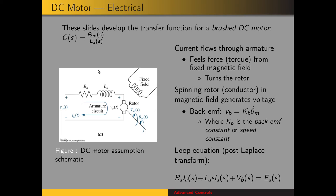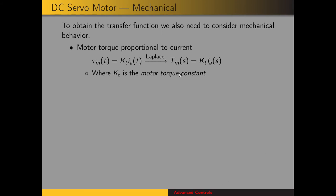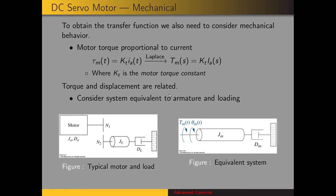We can't use the loop equation directly to get our transfer function, so we need to make substitutions to get position instead of current and voltage. The motor torque for a DC motor is proportional to the current, and that constant is called the torque constant KT. So motor torque equals KT times current. Taking the Laplace transform, T(s) = KT·Ia(s). Using Newton's second law, torque and displacement are related, allowing us to relate current to displacement.